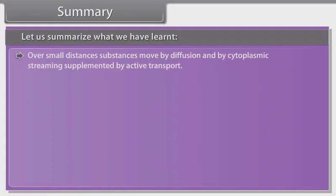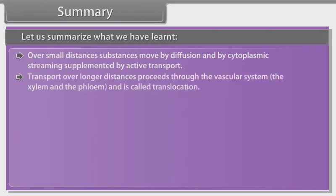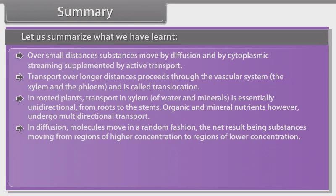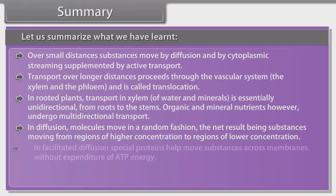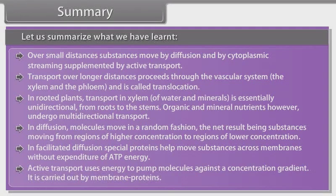Over small distances, substances move by diffusion and by cytoplasmic streaming, supplemented by active transport. Transport over longer distances proceeds through the vascular system and is called translocation. In rooted plants, transport in xylem is essentially unidirectional, from roots to the stems. Organic and mineral nutrients, however, undergo multidirectional transport. In diffusion, molecules move in a random fashion, the net result being substances moving from regions of higher concentration to regions of lower concentration. In facilitated diffusion, special proteins help move substances across membranes without expenditure of ATP energy. Active transport uses energy to pump molecules against a concentration gradient and is carried out by membrane proteins.